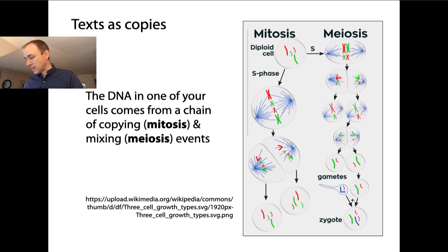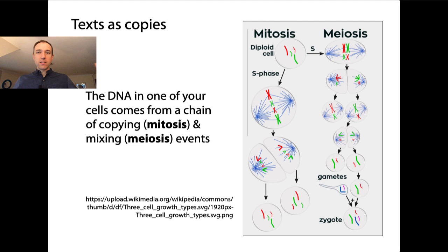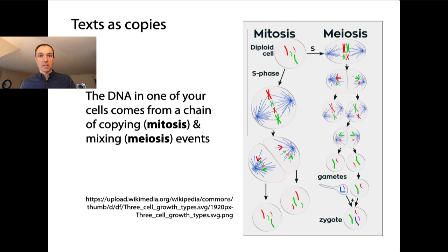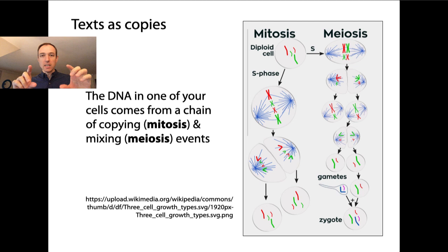So a lot of real-world processes that give us some of our most important large text data sets are these make a copy, make a change processes. This gives us hope that we can distill out a relatively small, non-redundant core. What we're talking about today is the first in a series where we're discussing a particularly effective and practical way to both compress and index at the same time, taking advantage of the fact that texts come to us through these make a copy, make a change processes. In particular, applying the Burrows-Wheeler transform will yield long runs of identical characters.